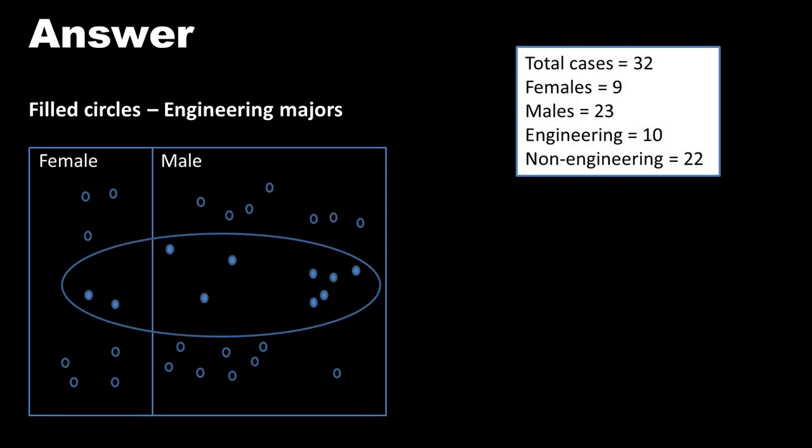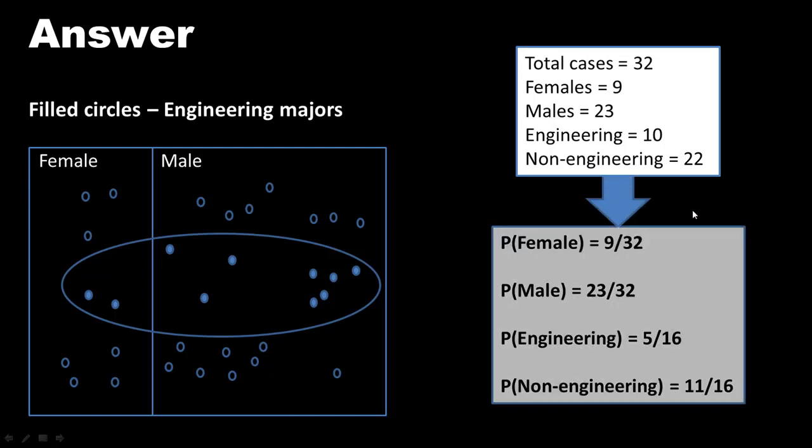So total cases is 32. In this example, it's not 36. There are nine females, 23 males, 10 engineering students, and 22 non-engineering students. Therefore, we can calculate all these probabilities. So probability of each of those is the number divided by 32, which is the total. You could calculate that. I haven't calculated the exact decimal value, just expressing it as all those fractions. So that's fine.